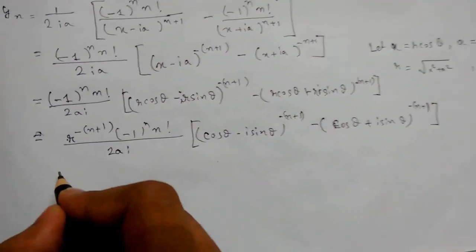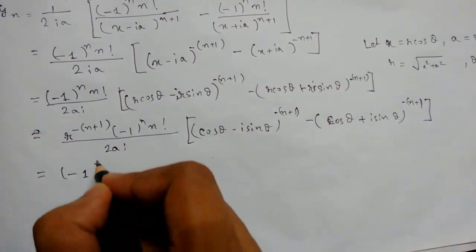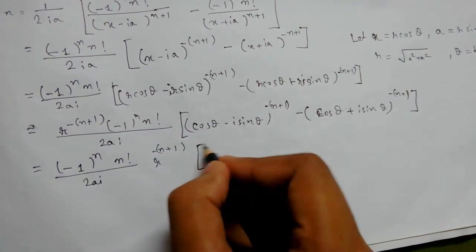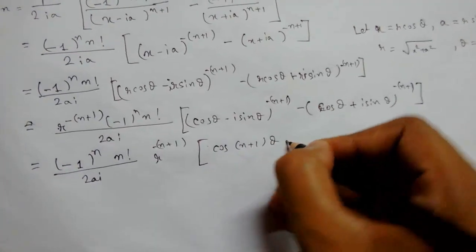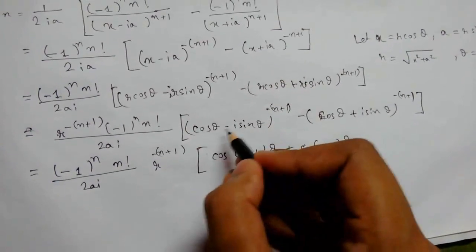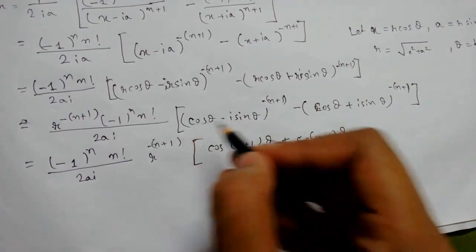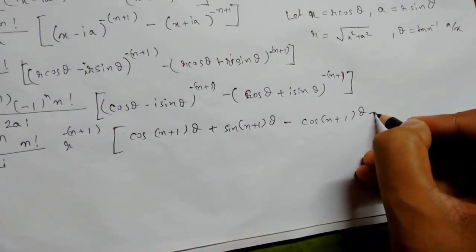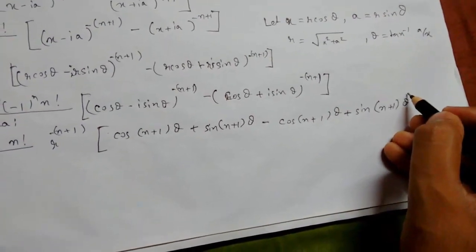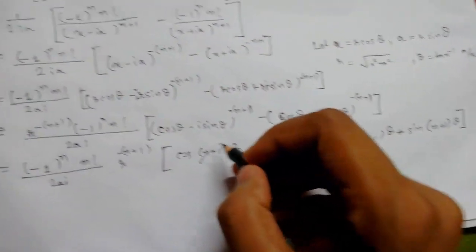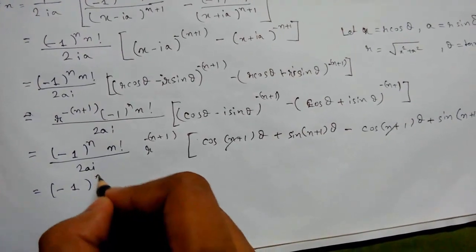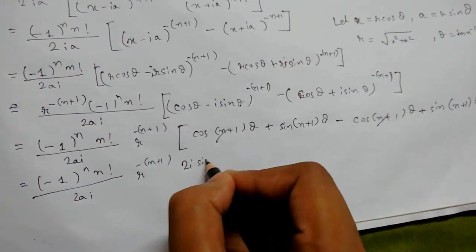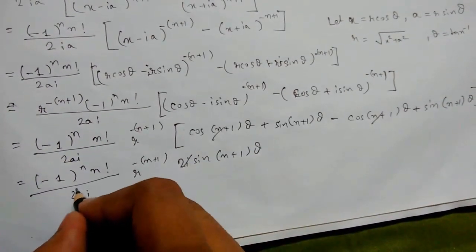Applying De Moivre's theorem, (cosθ − iota·sinθ)^(−n+1) becomes cos(n+1)θ − i·sin(n+1)θ, and (cosθ + iota·sinθ)^(−n+1) becomes cos(n+1)θ + i·sin(n+1)θ. Subtracting, the cosine terms cancel and we get −2i·sin(n+1)θ. So the expression becomes (−1)ⁿ · n! / (2ai) · r^(−n+1) · 2i·sin(n+1)θ, and the 2i cancels.